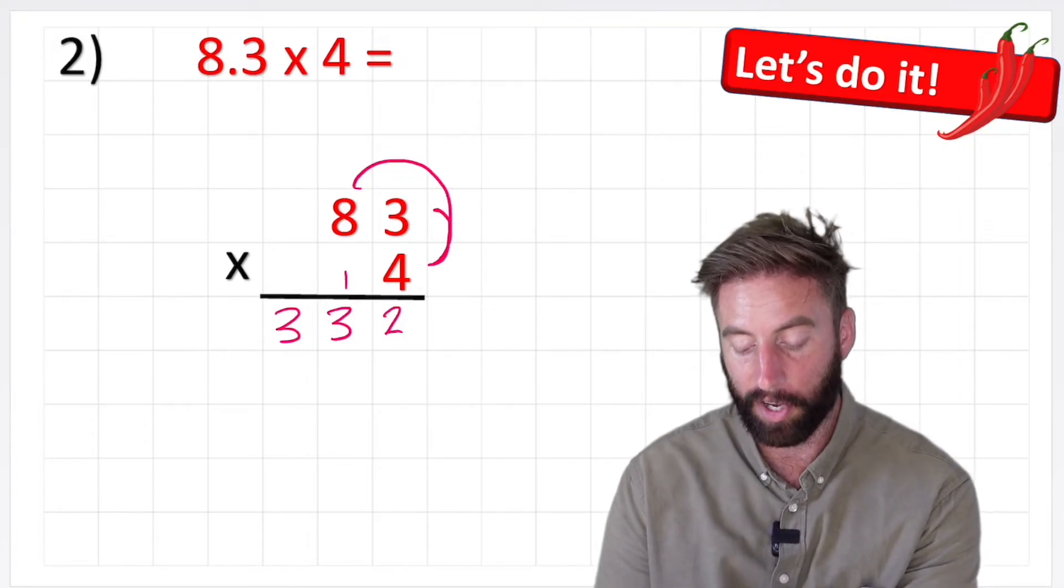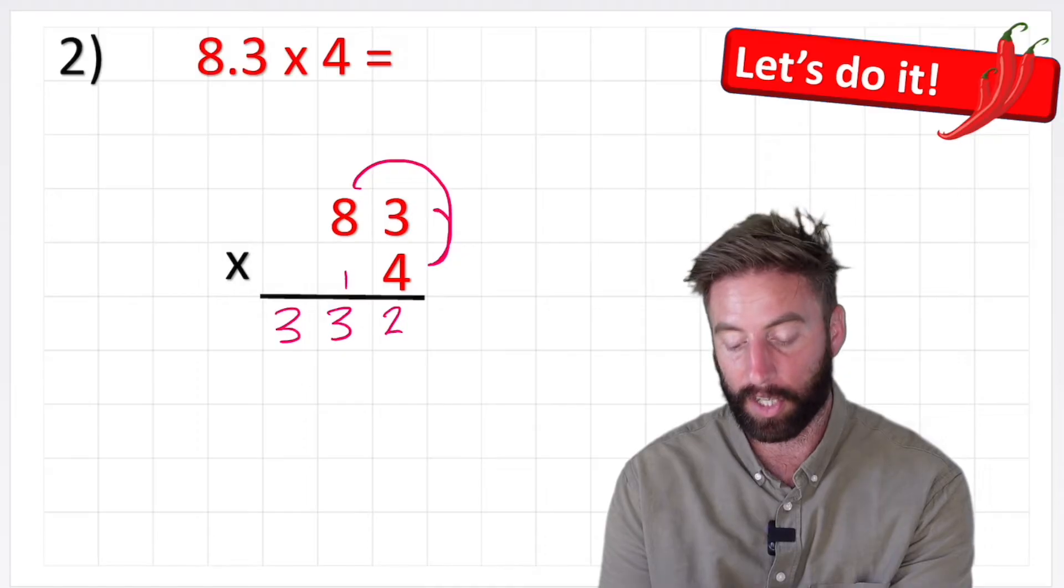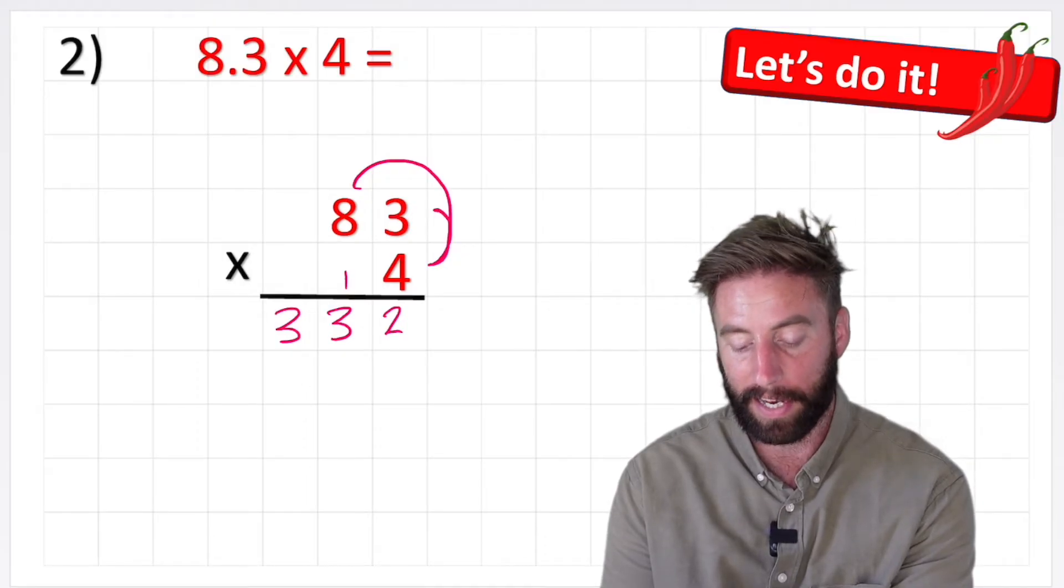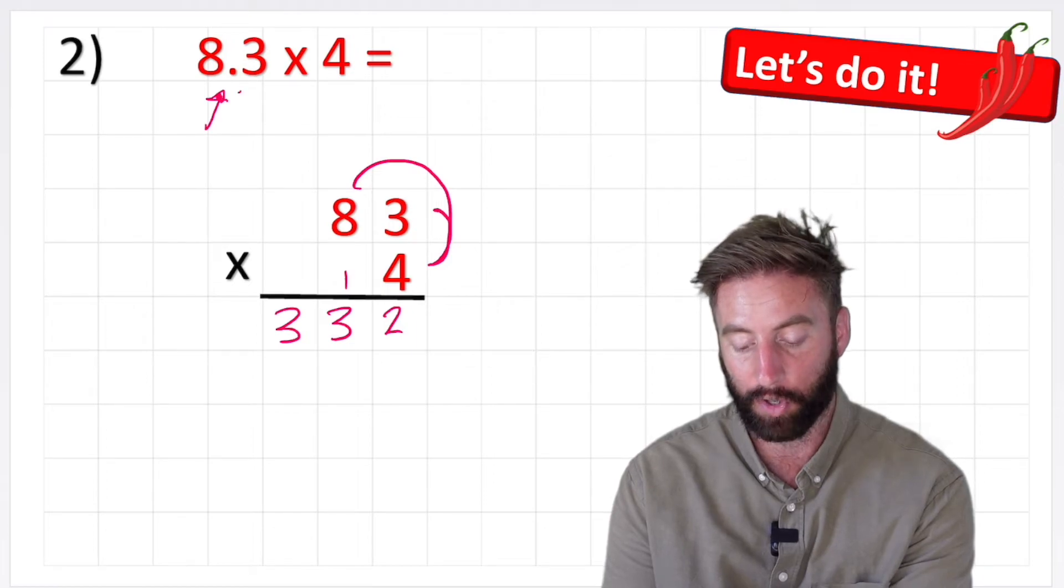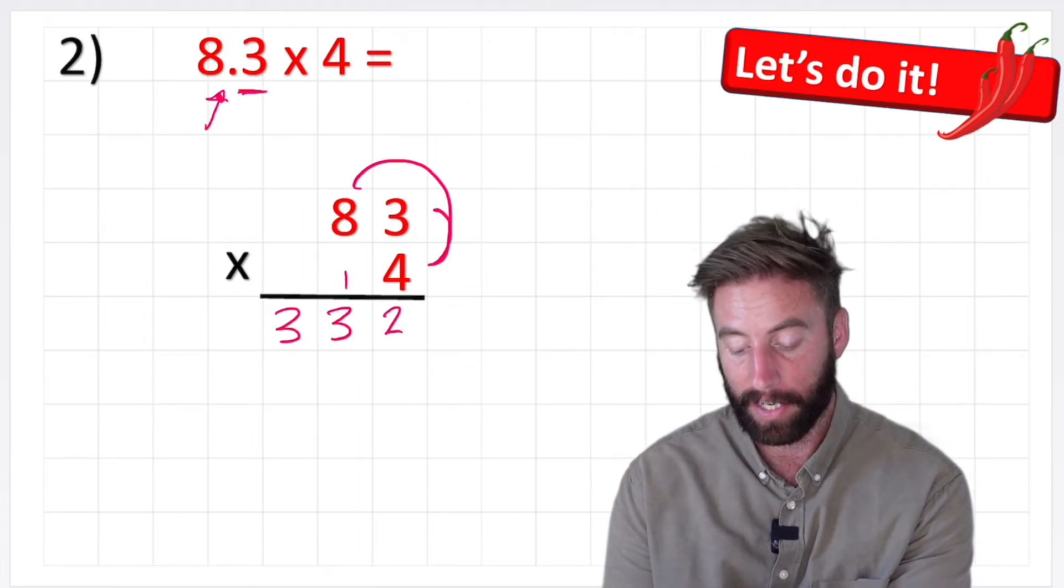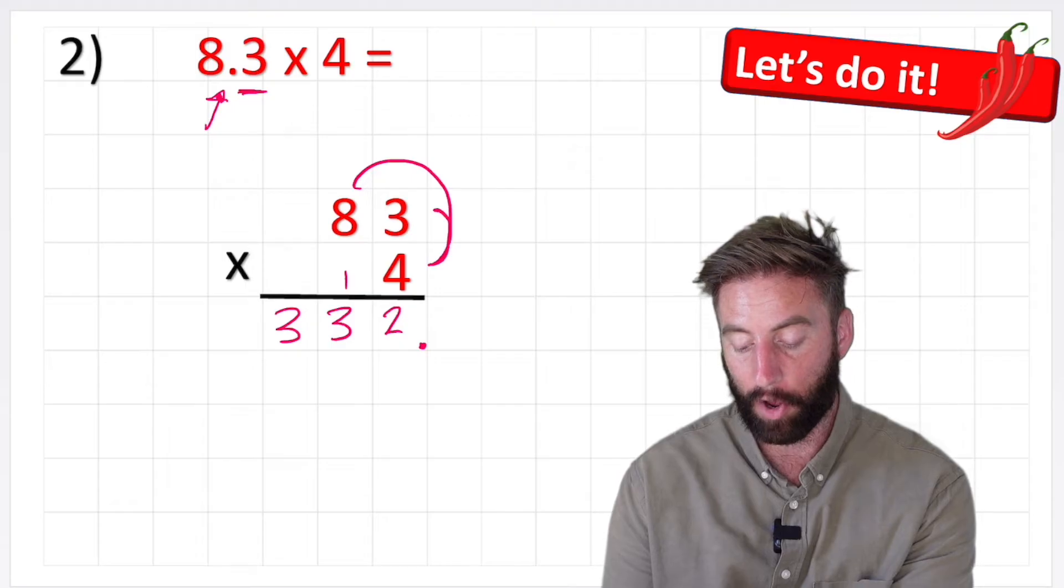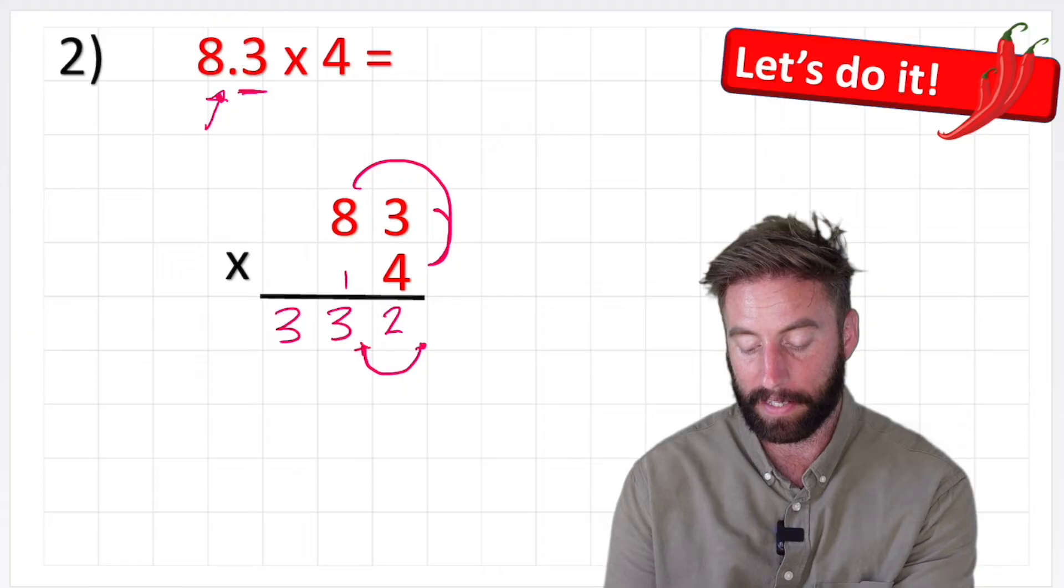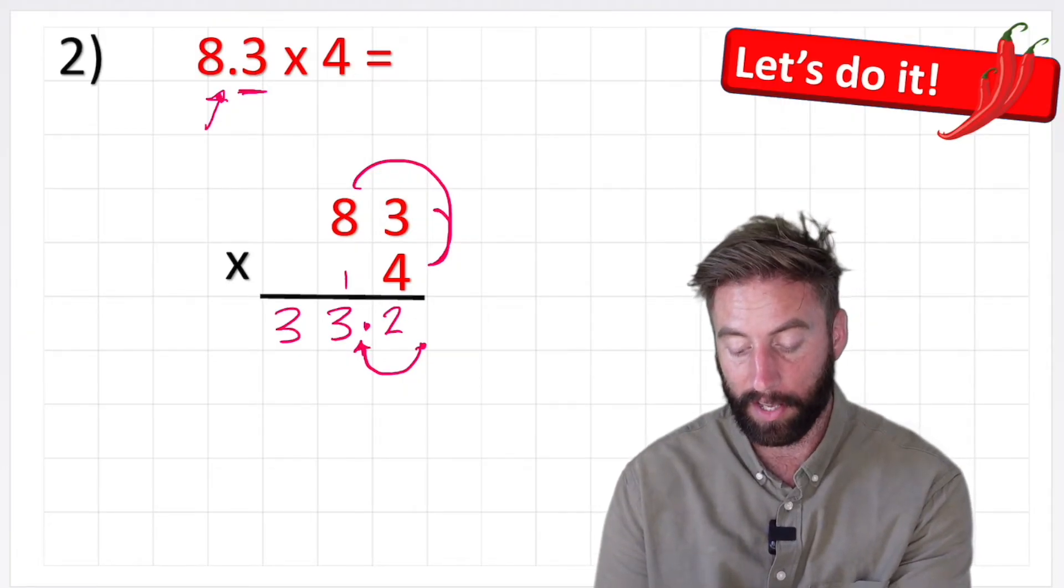So my answer at the moment looks like 332, but remember we're now going to look at how many digits there were after the decimal place, and in this case if this is our decimal place here in the question, we have just one digit again after our decimal place. So now let's apply that to our answer, put our decimal place, and then go back one place. So our new decimal point would be here, making the answer 33.2.